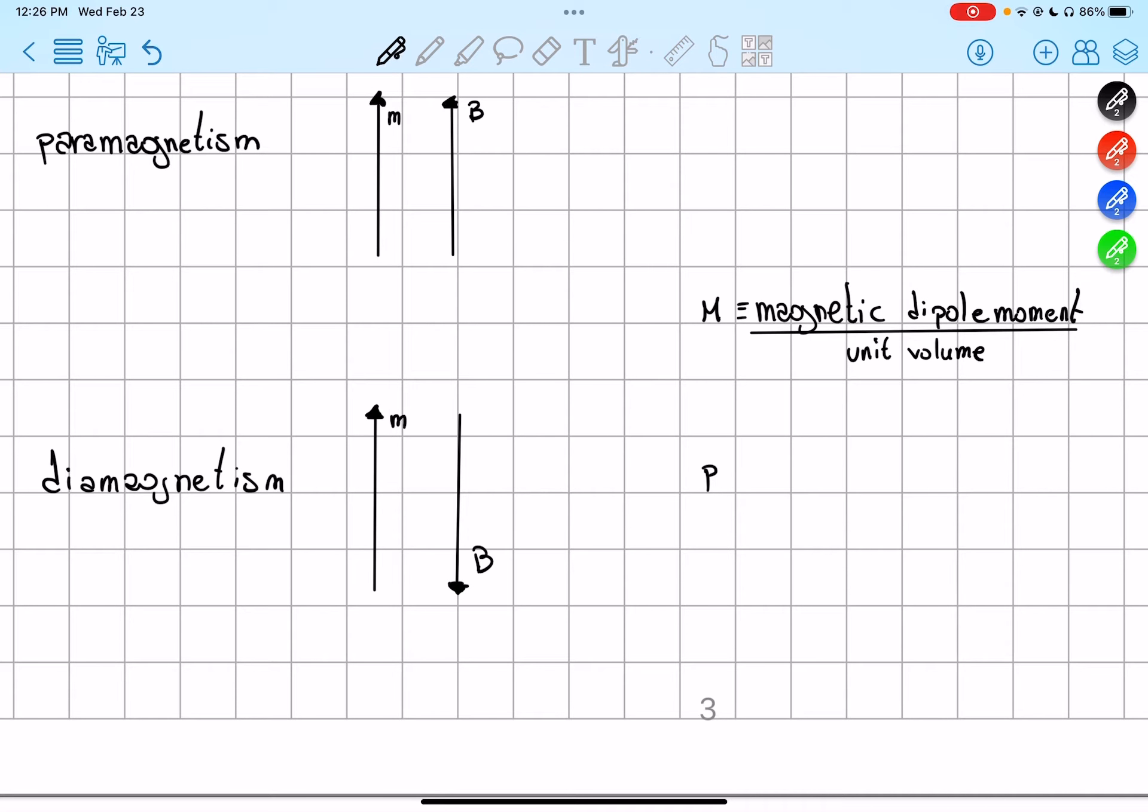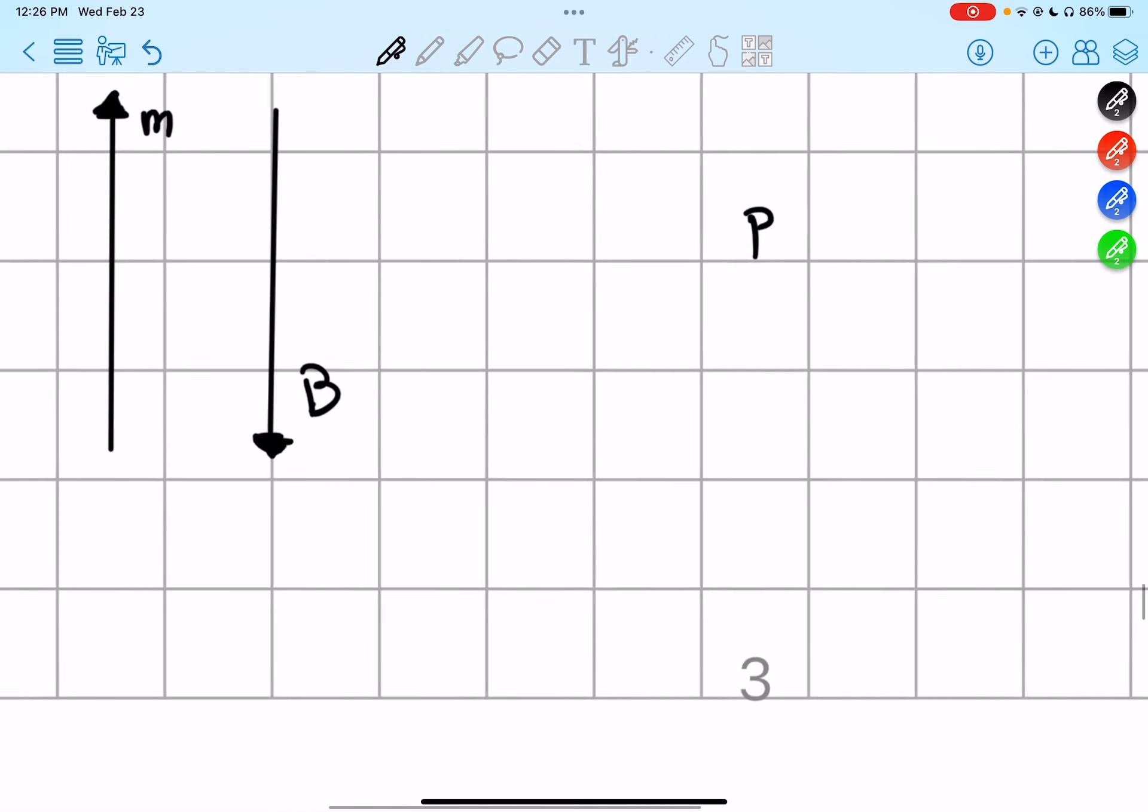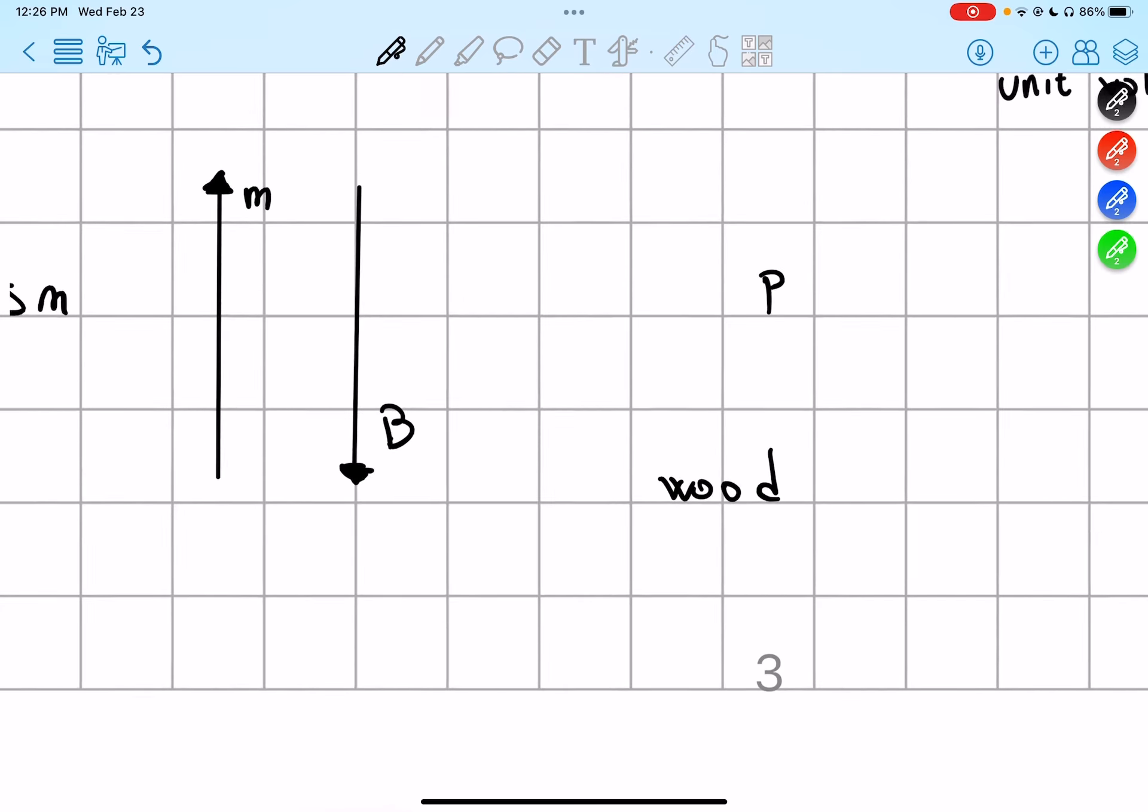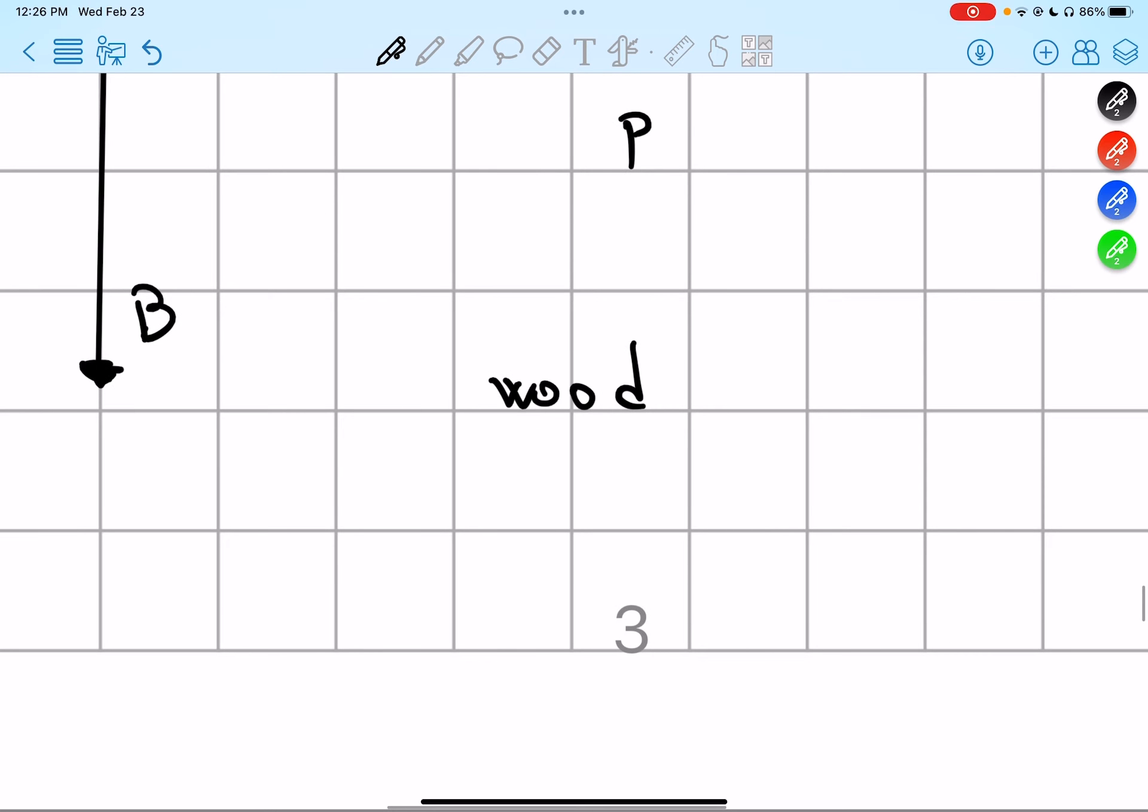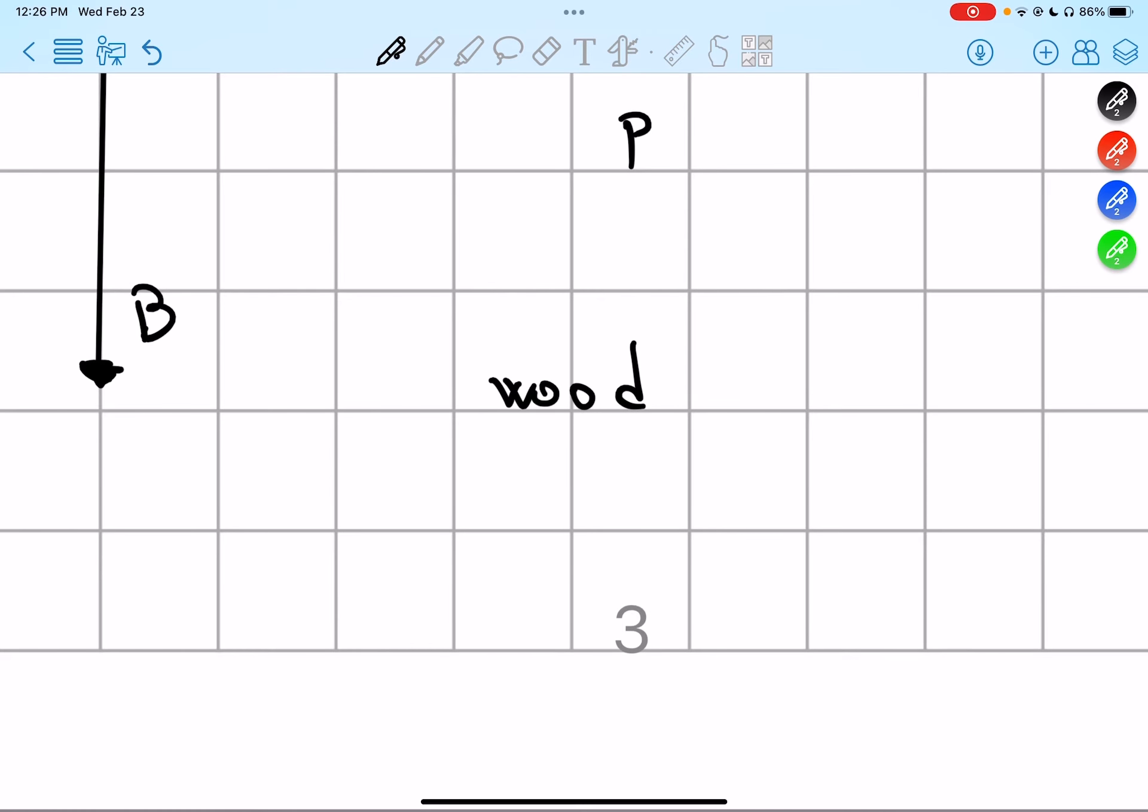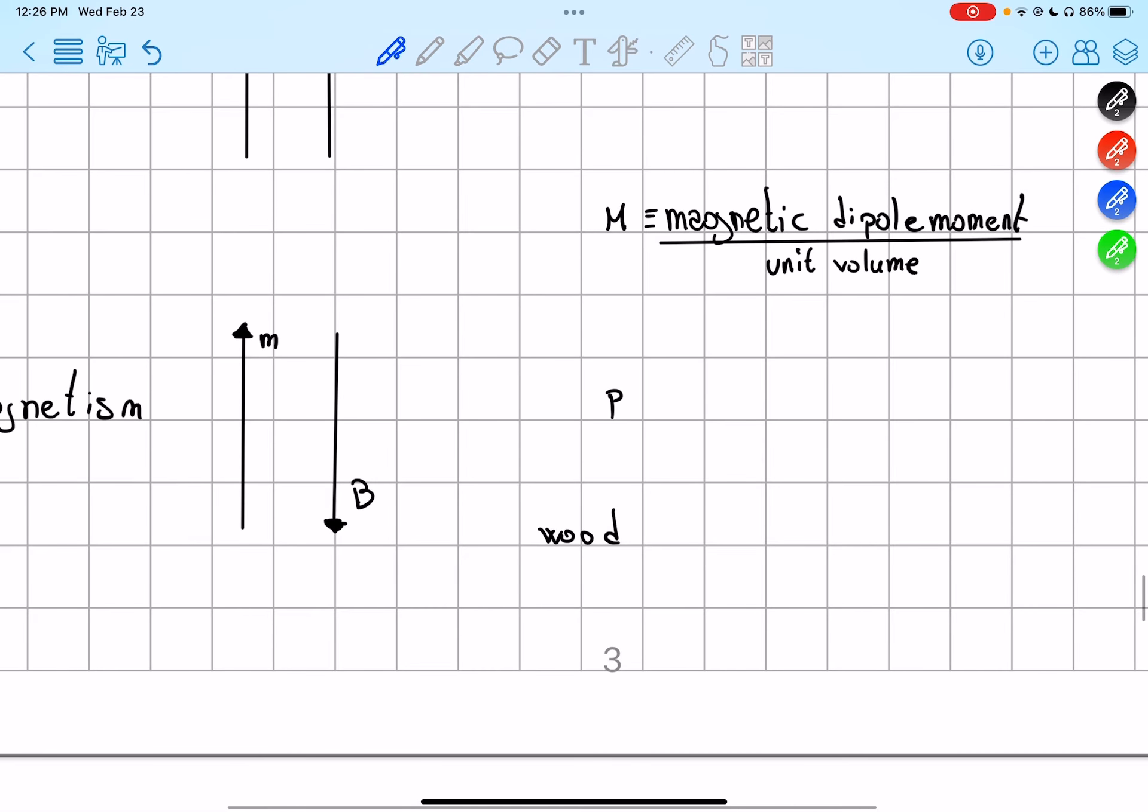But paramagnetism and diamagnetism actually happen also with a piece of wood. A piece of wood can be paramagnetized or diamagnetized very easily. However, the magnetic dipole moment per unit volume of the wood will be very, very small.